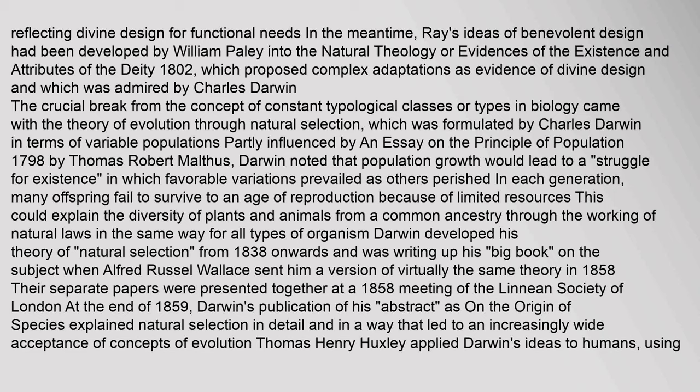The crucial break from the concept of constant typological classes came with the theory of evolution through natural selection, formulated by Charles Darwin in terms of variable populations. Partly influenced by Thomas Robert Malthus's Essay on the Principle of Population of 1798, Darwin noted that population growth would lead to a struggle for existence in which favorable variations prevailed as others perished. In each generation, many offspring fail to survive to an age of reproduction because of limited resources.